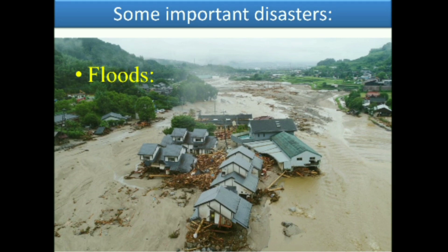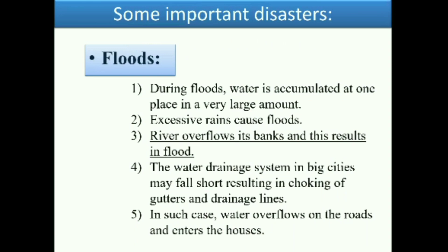The second disaster is floods. During floods, water is accumulated at one place in a very large amount. Excessive rains cause floods, rivers overflow their banks, and this results in flooding. The water drainage system in big cities may fall short, resulting in choking up of gutters and drainage lines. In such cases, water overflows on the roads and enters houses.